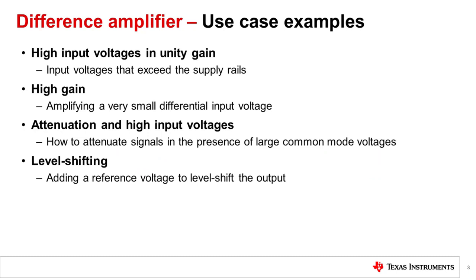We'll first cover a simple unity gain difference amplifier with large input voltages. Next, we'll show how you can alter the resistors in the difference amplifier to achieve high gain or attenuation. And lastly, we'll go over an example which uses the reference pin to level shift an output voltage.